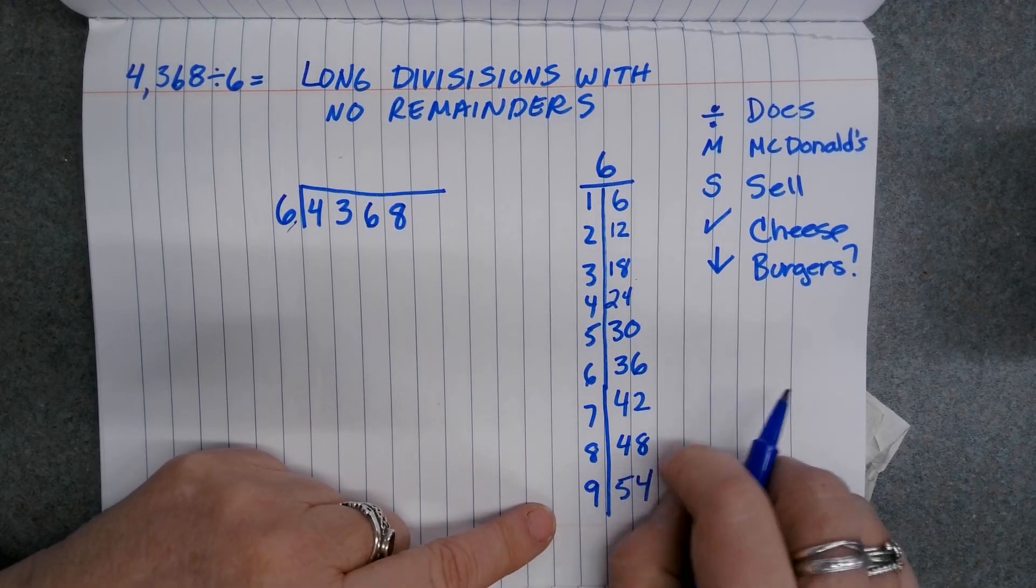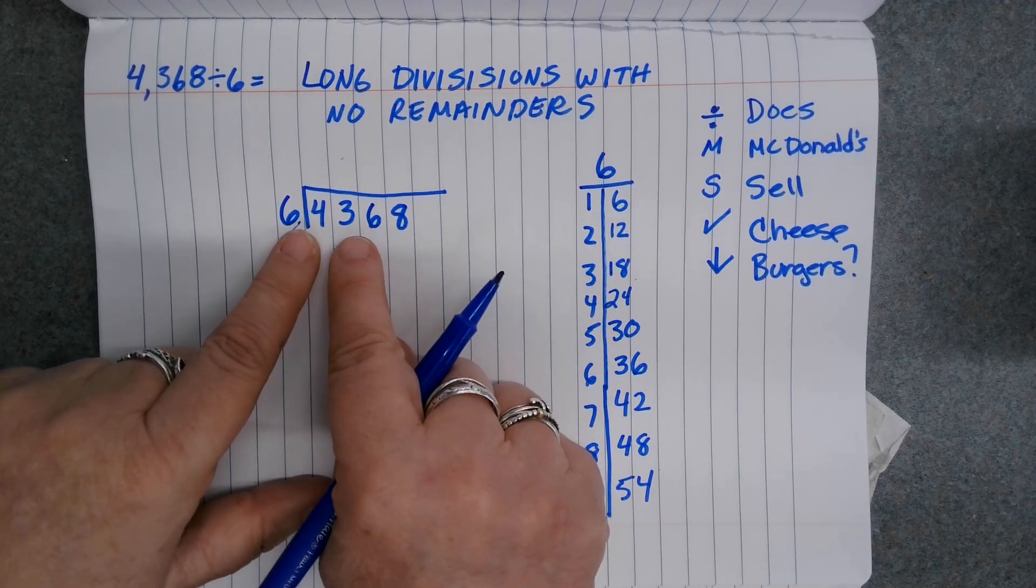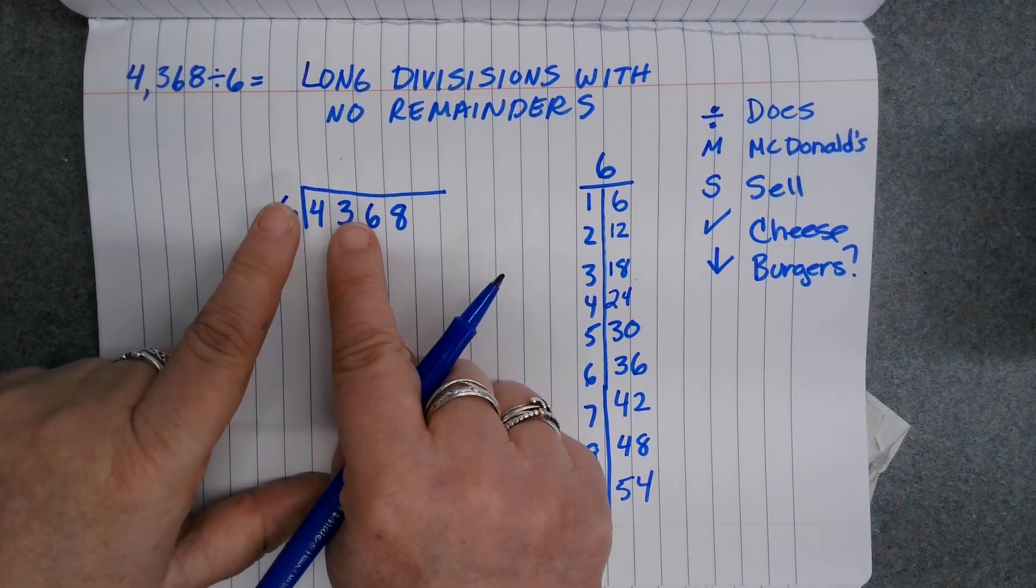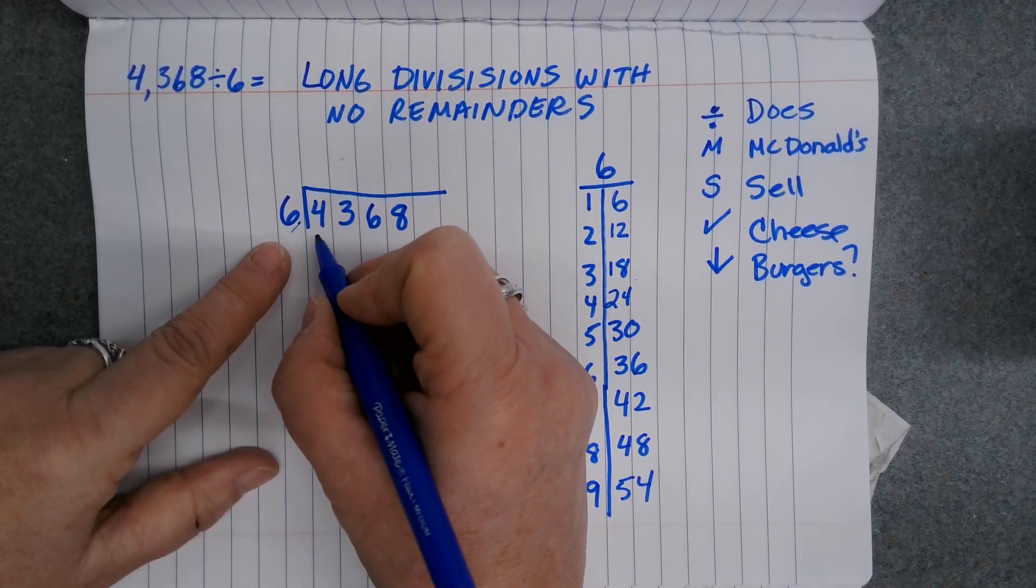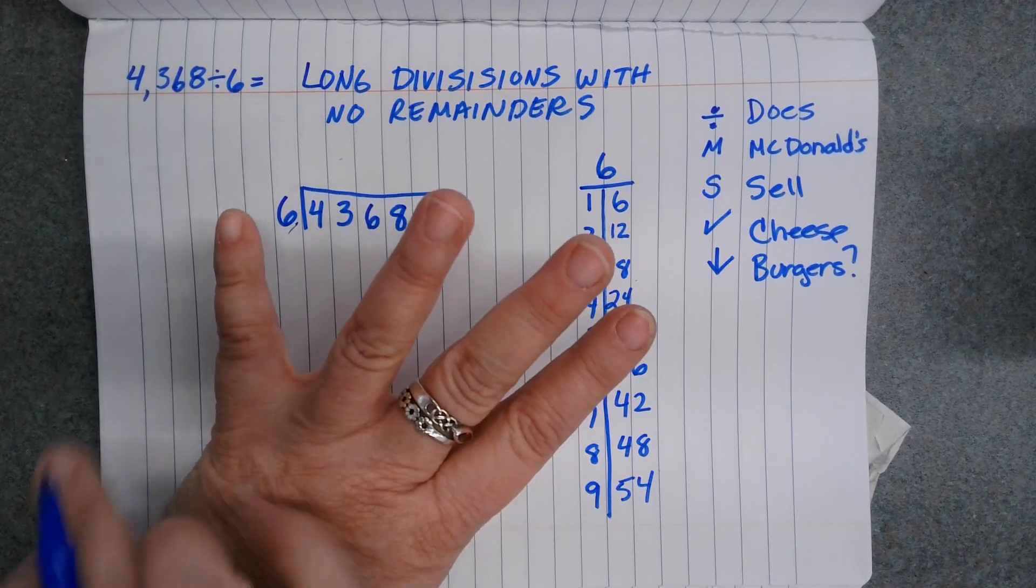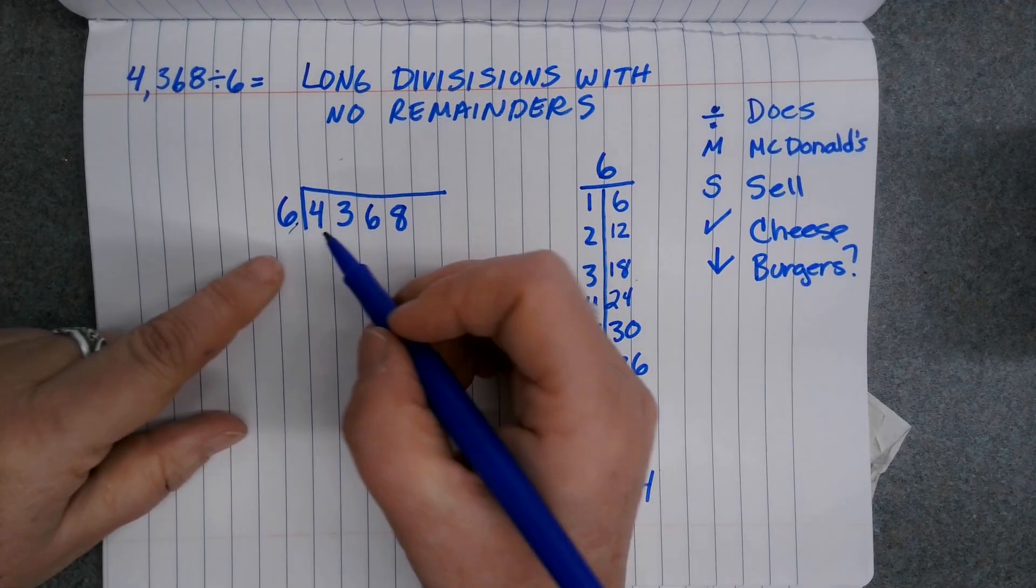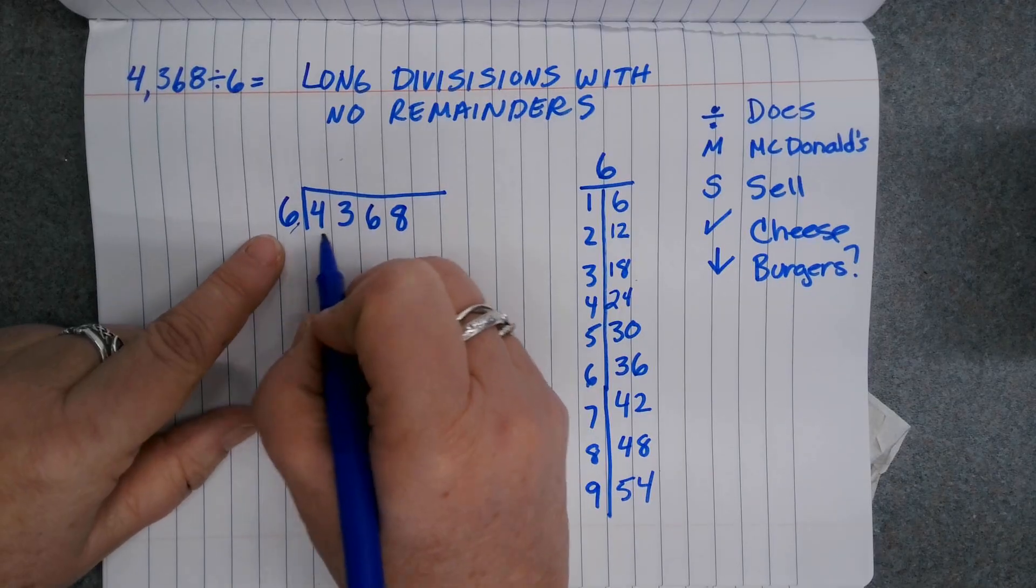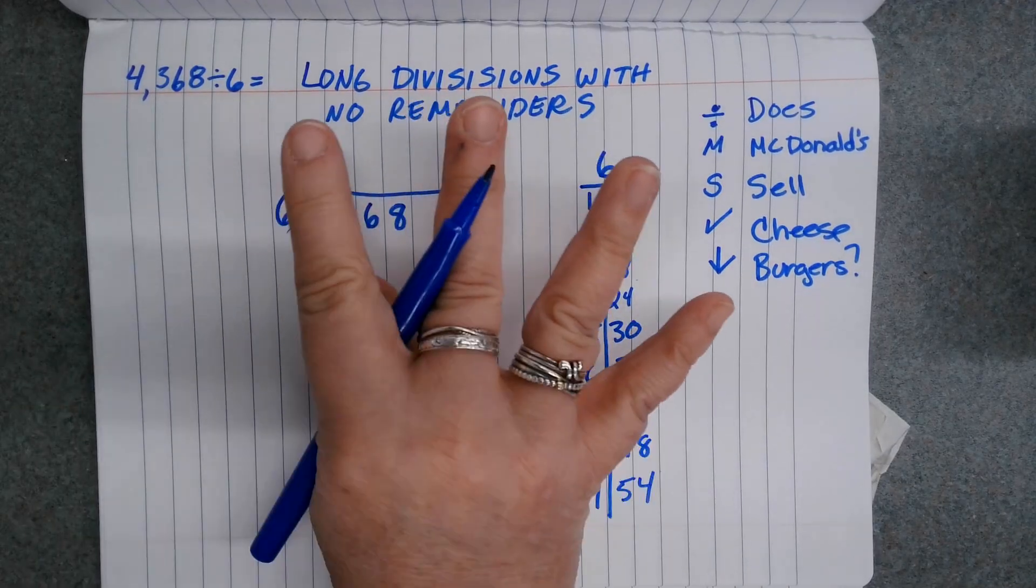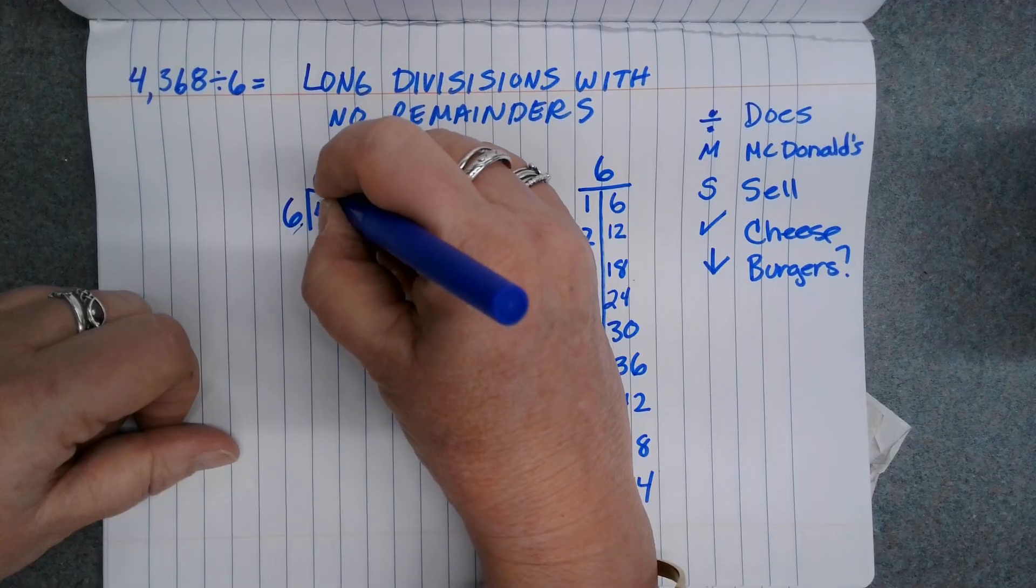This is super important. So next I'm going back to my division problem. I'm going to look at this first number. I have 4. How many groups of 6 can I make out of 4? Well, I can't make any groups of 6. I can make 0 groups. So I'm going to put a 0 up here.